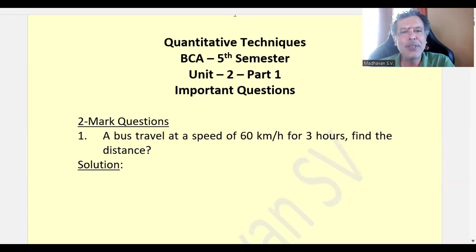Hello everyone, in this we are continuing with our quantitative techniques, BCA's fifth semester subject, unit 2, part 1, some of the important questions. First one, a bus travel at a speed of 60 km per hour for 3 hours, find the distance.